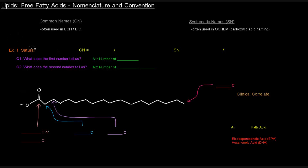Let's start off with our first example: we have a saturated 18-carbon fatty acid. The convention is 18 colon 0. So what do those two numbers tell us? The first number, 18, tells us how many carbons are in the fatty acid chain. The second number tells us the number of double bonds — specifically the number of carbon-carbon double bonds — because we can't count the carbonyl double bond. So this is saturated.